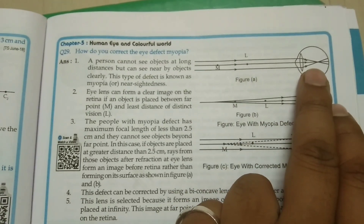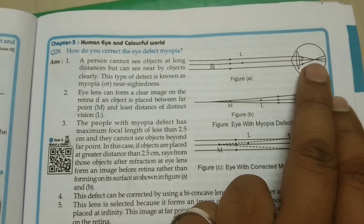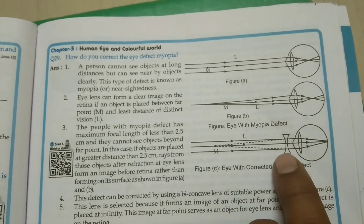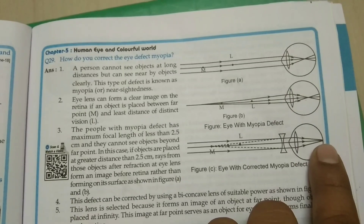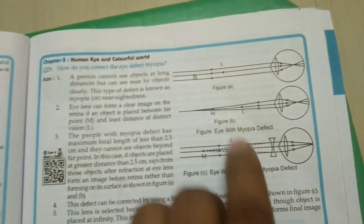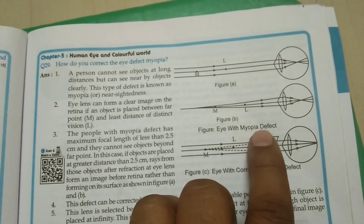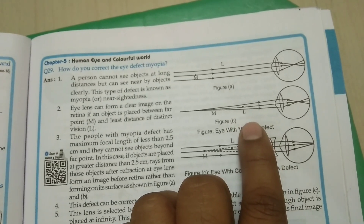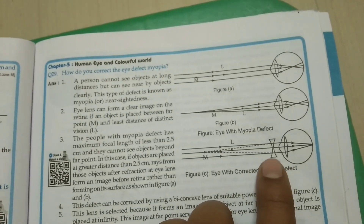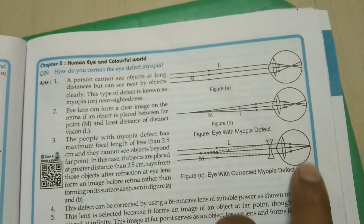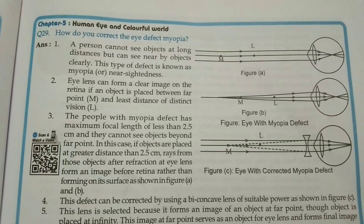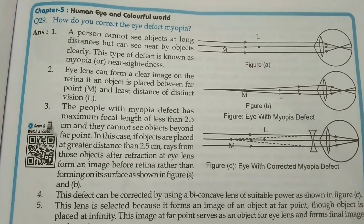A person with myopia cannot see objects at long distances because the image forms in front of the retina. Due to that reason, we need to use a bi-concave lens. The bi-concave lens diverges the rays so that the image is formed on the retina. You need to draw this diagram as well. The definition of myopia and correction using a bi-concave lens of suitable power are the two key points.